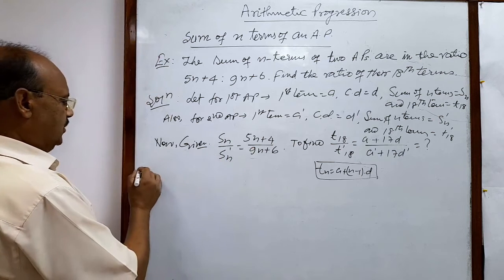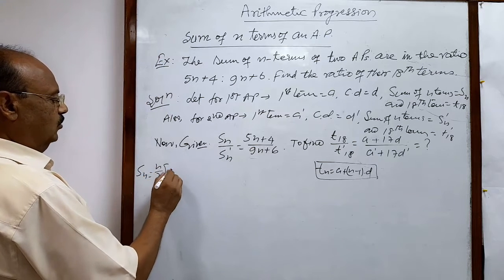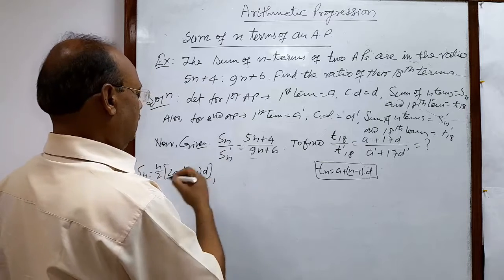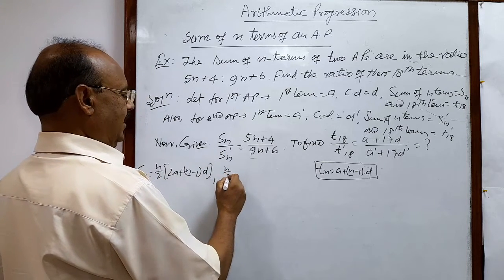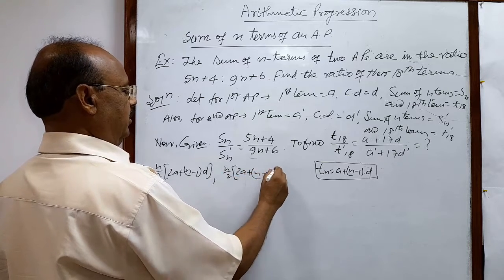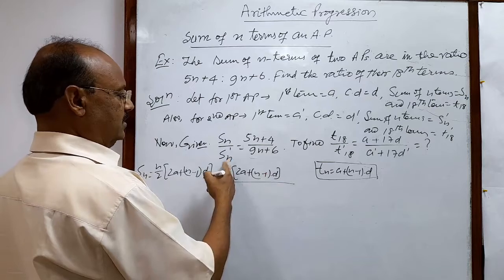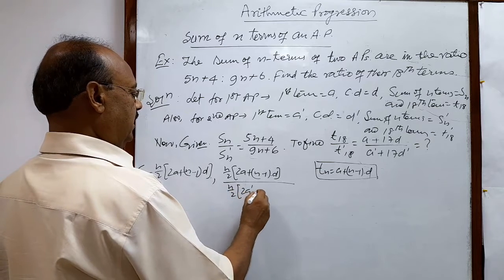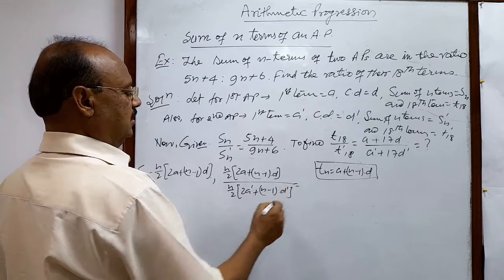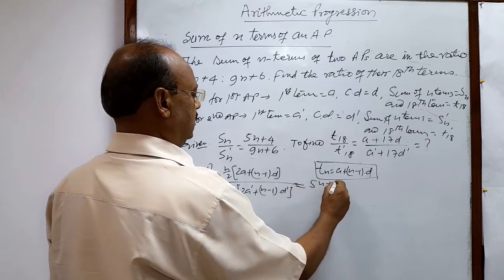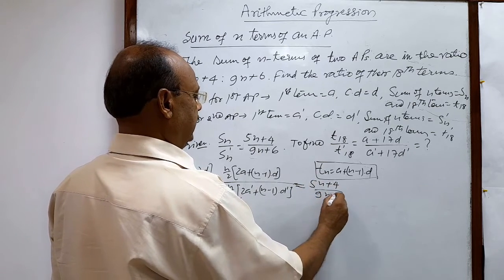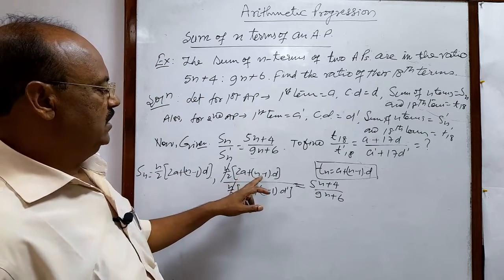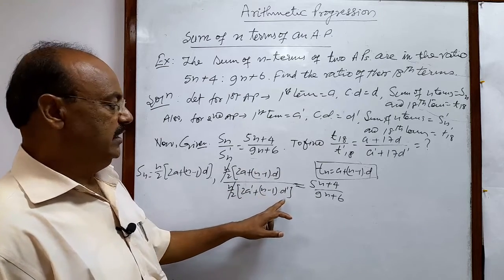And here let us use the formula of sum of n terms. Sn is n by 2, 2a plus n minus 1 into d. So this ratio will be written as: Sn means this formula, so n by 2, 2a plus n minus 1 into d, and denominator Sn dashed is n by 2, number of terms same n, 2a dashed plus n minus 1 into d dashed. This is equal to 5n+4 divided by 9n+6. N by 2 will be cancelled out. So what we are getting here: 2a plus n minus 1 into d, and 2a dashed plus n minus 1 d dashed is equal to this much.